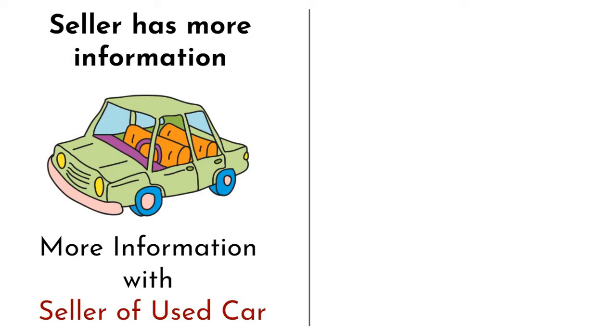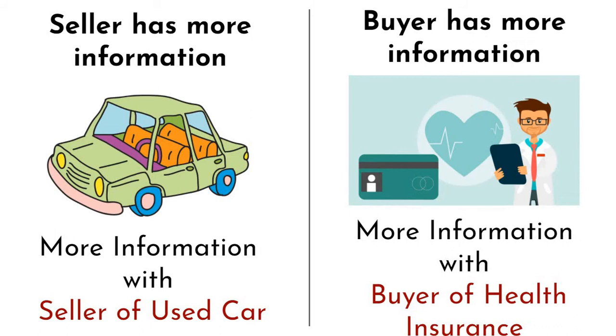In the case of buying health insurance, the buyer has more information about his lifestyle and behavior patterns. The buyer could possibly lie or hide reckless behavior, creating an information imbalance to take advantage of the insurance seller.